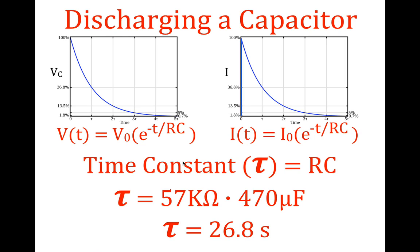The time constant tells us how long it takes to charge or, in this case, discharge a capacitor. If we want the capacitor to take longer to discharge, we can increase the resistance. If we want it to discharge more quickly, we can decrease the resistance. You'll also notice that the time it takes to discharge is not dependent upon the initial voltage or the initial current, only on the resistance of the resistor and the capacitance of the capacitor — change those things and you get a different time constant.